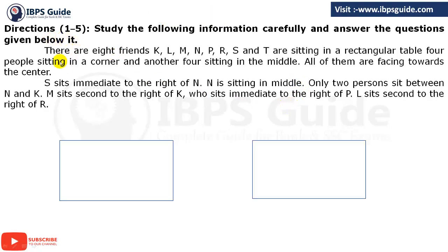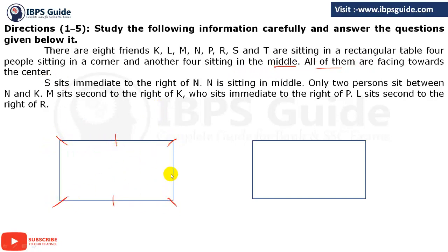So, the first puzzle: there are 8 friends — K, L, M, N, P, R, S, and T — sitting at a rectangular table. 4 people are sitting at the corners and another 4 are sitting in the middle. All of them are facing towards the center. So in total we have 8 persons: 4 at the corners and 4 at the middle, all facing the center.